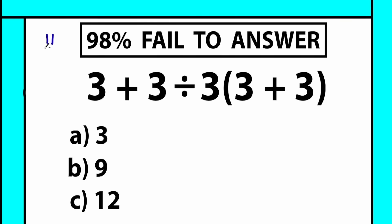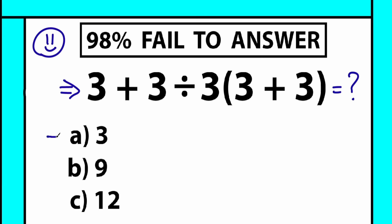All right, so happy to see you here. Today we have a really interesting math question — you can see it right here in the middle of the screen. We have 3 plus 3 divided by 3, and 3 plus 3 inside parentheses. So what is the correct answer? We have three options: option A, option B, and option C. Write your solution down into the comment section and we will check our answers here in a few minutes.